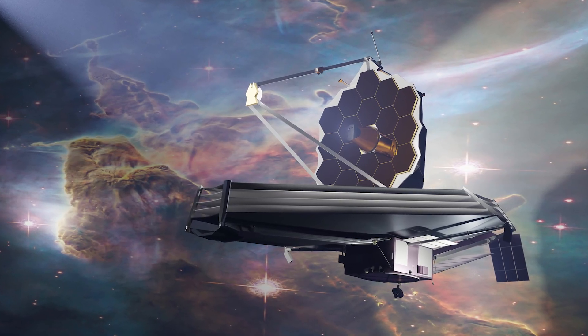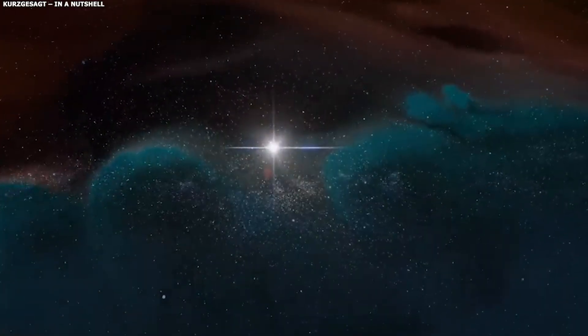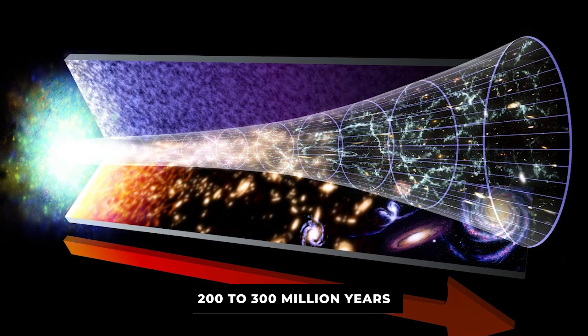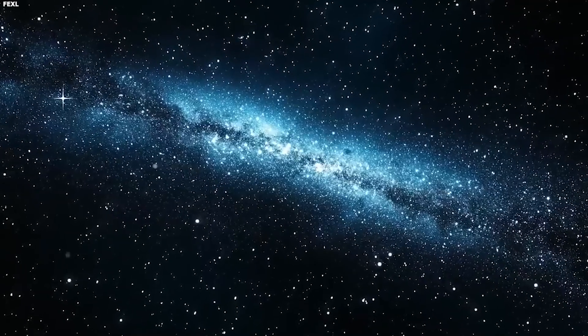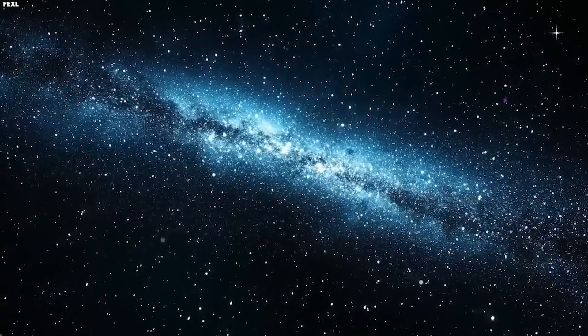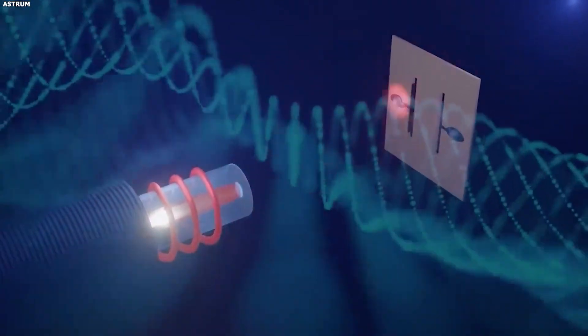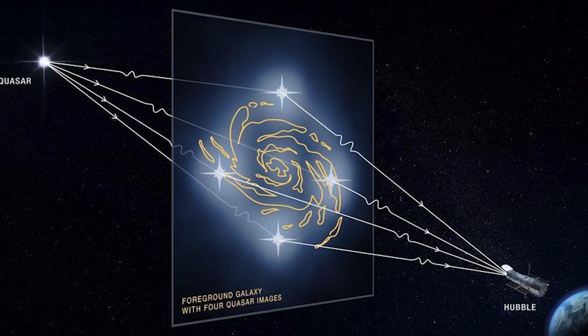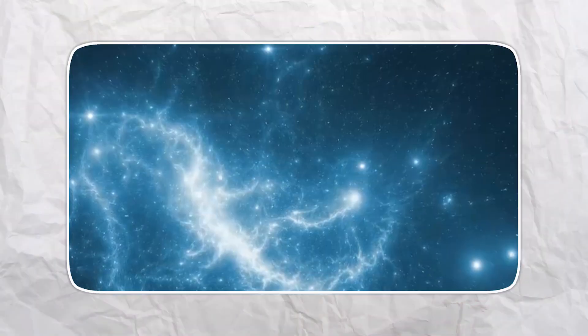Webb began finding massive galaxies in the very early universe. We're talking about galaxies that formed just 200 to 300 million years after the Big Bang. These aren't small proto-galaxies slowly pulling themselves together. These are huge, bright, mature systems. Some contain billions of stars. They're shining with the light of entire galactic civilizations, and they shouldn't be there.